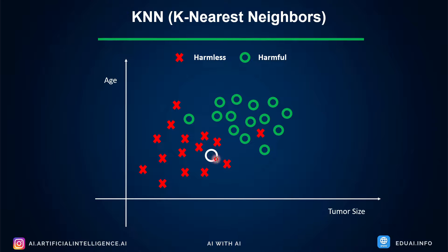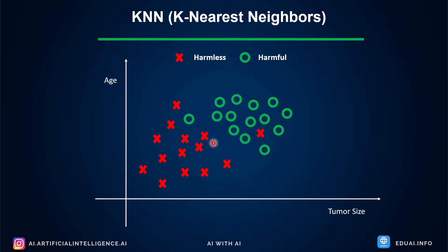Now assume in the future you get a new data point — a new patient takes an appointment, does a test, and the white circle here represents that new data point. We need to decide whether this new patient has a harmless or harmful tumor. By looking at the data you can say it may belong to harmless, because most of the neighbors in the cluster are harmless. KNN — K-Nearest Neighbor — asks its neighbors: if more neighbors are from the harmless family, then this new data point will also be classified as harmless. That is how the KNN algorithm works.